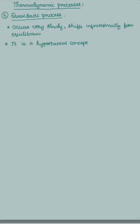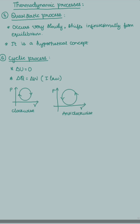A quasi-static process occurs very slowly and shifts infinitesimally from the equilibrium — it is a hypothetical concept. In a cyclic process, the change in internal energy will be zero, so ΔQ equals ΔW. In a cyclic process, if the direction is clockwise, work done will be positive; when it is anticlockwise, work done will be negative.